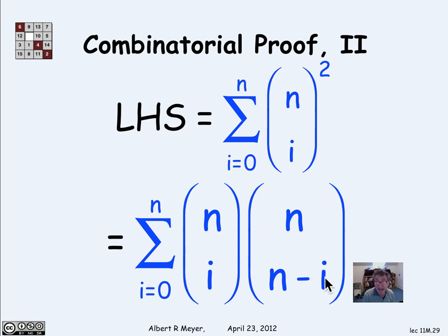There's a combinatorial proof of that, after all. Choosing i out of n elements that you're going to keep is the same as choosing the n minus i elements that you're not going to keep. So the equality between n choose i and n choose n minus i can also be proved by a combinatorial argument, as well as directly from the definition of the coefficient.